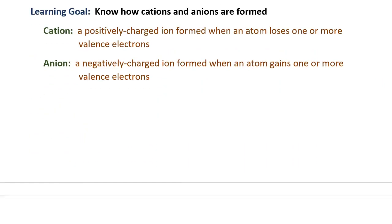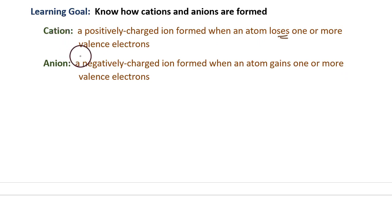The next learning goal is to know how cations and anions are formed. A cation is a positively charged ion formed when an atom loses one or more valence electrons. An anion is a negatively charged ion formed when an atom gains one or more valence electrons. To make a positive ion, an atom has to lose electrons — losing negative electrons means it will have more positive protons in the nucleus, giving it a positive charge. To make an anion, the atom gains electrons, giving it more negative than positive charge.